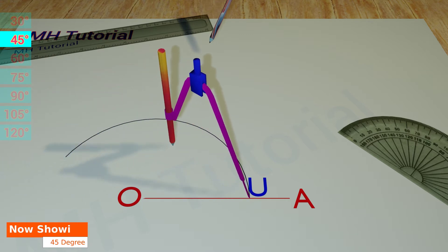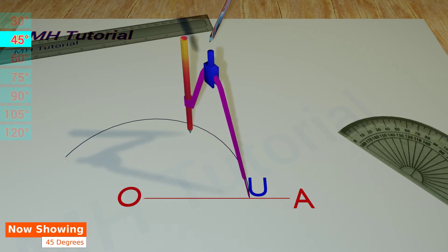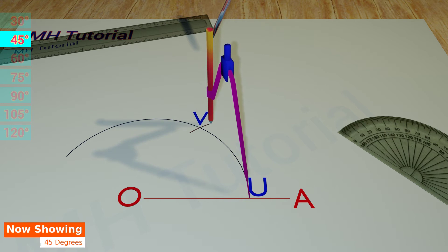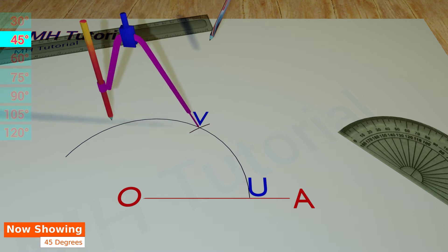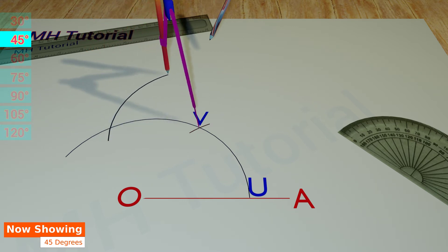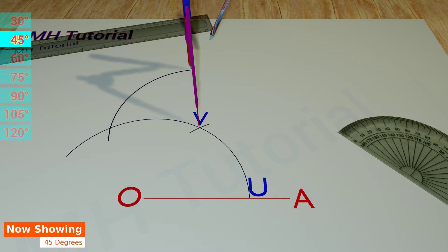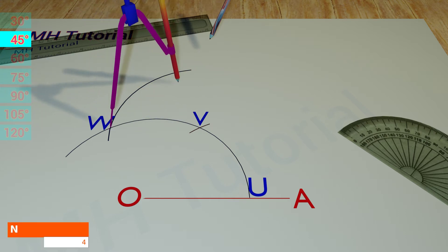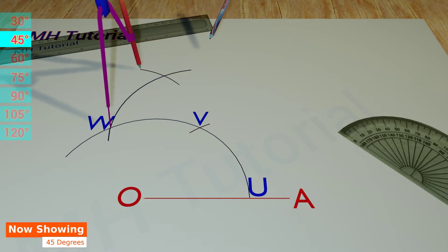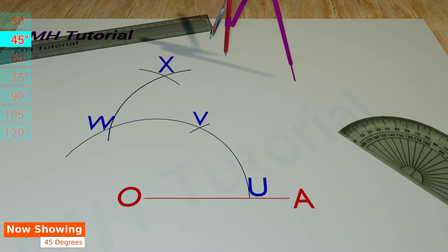Then, another circle arc of the same radius is drawn making point U as its center. This circle arc intersects the previous one at point V. Thereafter, point V is made center to draw another circle arc of equal radius, this time slightly larger. Let this arc meet the first one at point W. Again, point W is taken as center of another circle arc, to get an intersection against the third arc. This point of intersection is X.